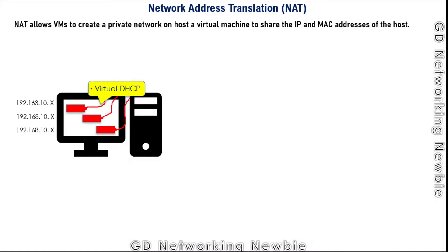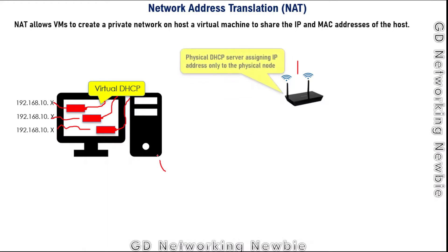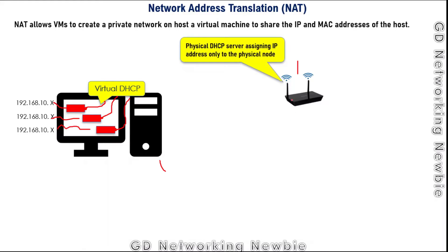This virtual DHCP normally uses private IP addresses, and all these IP addresses are within the same subnet which we define as a pool. Now we can also have a physical DHCP server. For instance, at my home I have a Wi-Fi router, and my host — my physical computer — will be getting its IP address from that wireless router, which is also acting as a DHCP server.